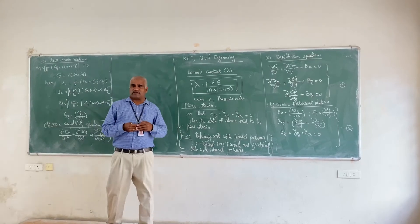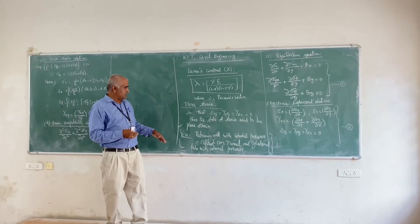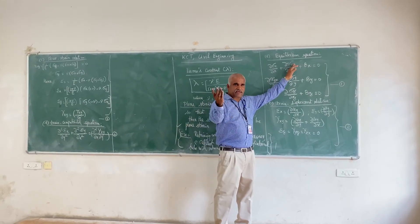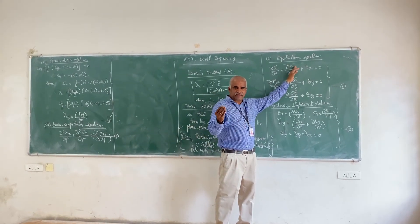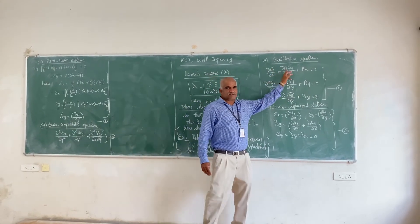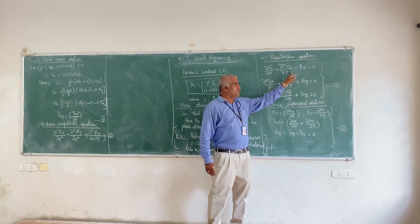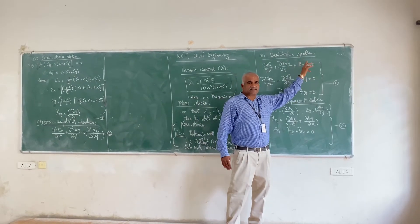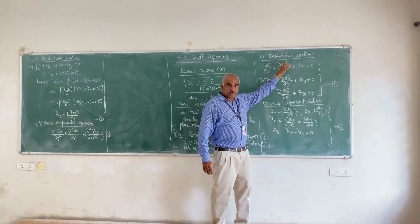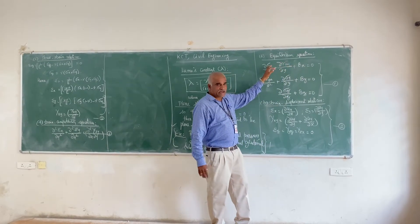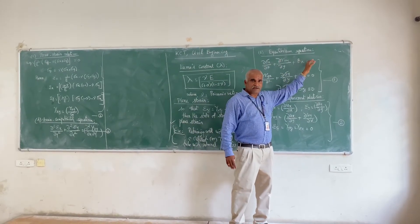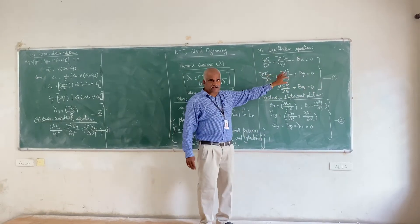Now, the equilibrium equations in the theory of elasticity — equation number 1. The first is the equilibrium equation derived for plane stress: (∂σ_x/∂x) + (∂τ_xy/∂y) + body force in x-direction = 0, where tau_xy is the shear stress and sigma_x is the normal stress in the x-direction.